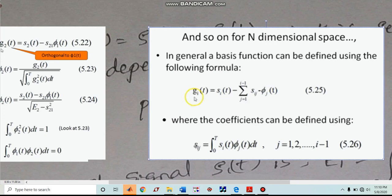How we can find coefficients? This is the equation to find coefficients. Already we have seen S21. How it is calculated? S2 of t multiplied by Phi1 of t, dt integrated over 0 to t, where J is from 1 to I minus 1. I hope it is pretty much clear how to proceed with Gram-Schmidt orthogonalization for given signals.